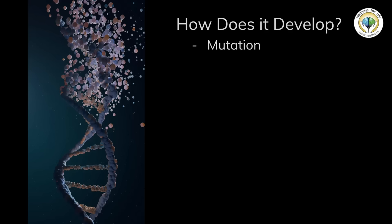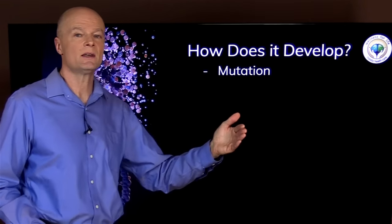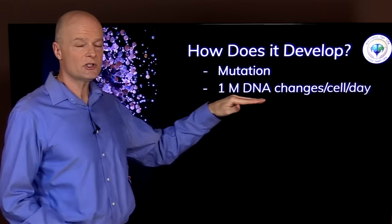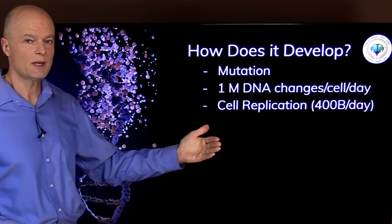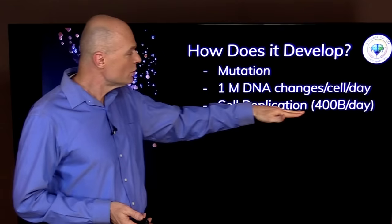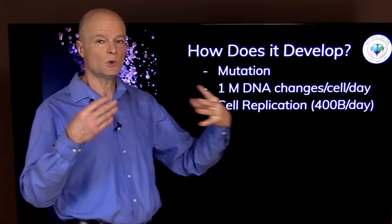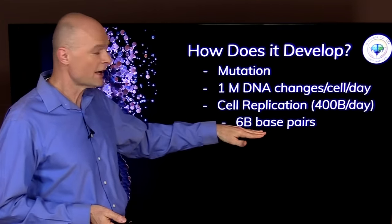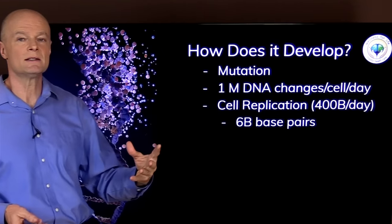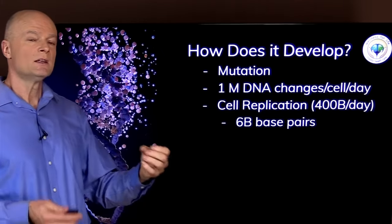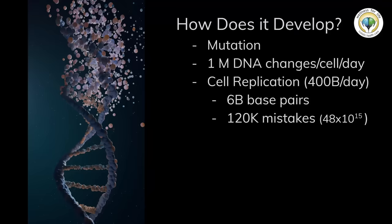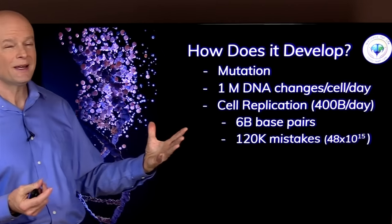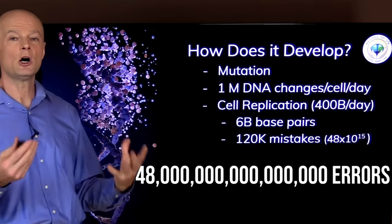Next question is how does cancer develop? Well, it all starts with a mutation, a change in DNA sequence. Your body makes about 1 million DNA changes per cell per day. That's just part of daily operations. When we start counting cell replication, making new cells, that number becomes astronomical. You're making 400 billion new cells per day because old ones wear out. And every time you make a new cell you have to copy 6 billion base pairs. So obviously with that number of copies it's not going to be perfect. You're making about 120,000 mistakes per cell, or per day on the whole you're making 48,000 trillion mistakes or copy errors.